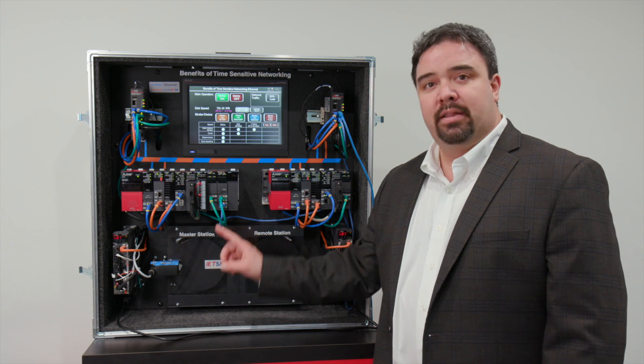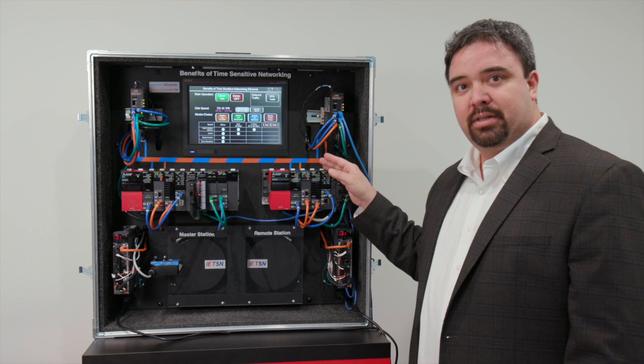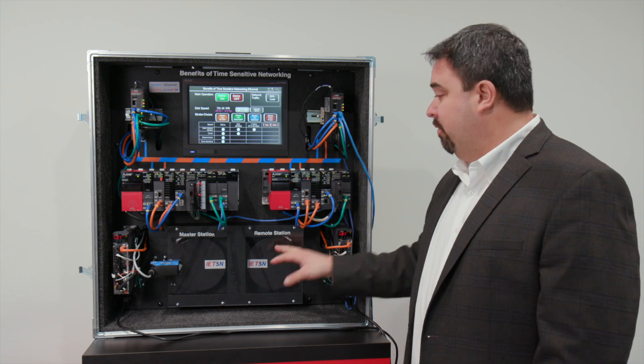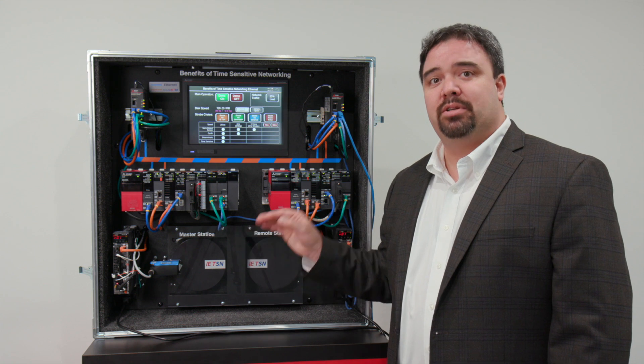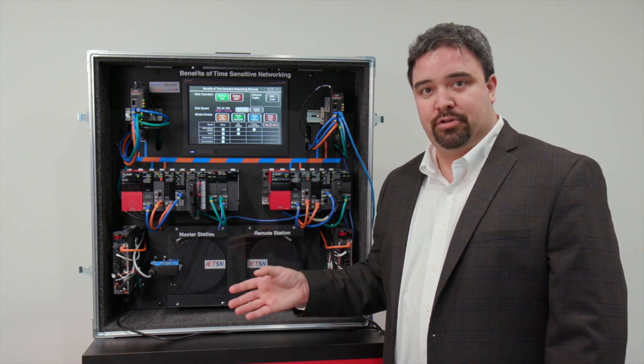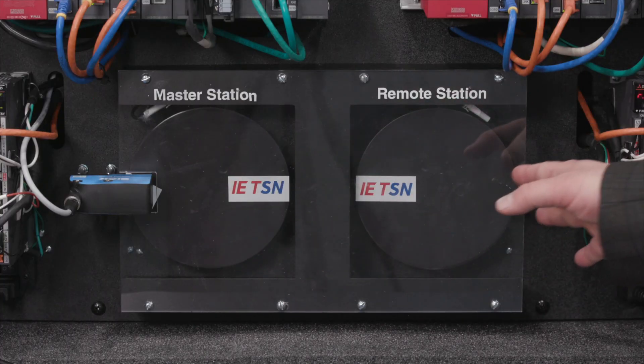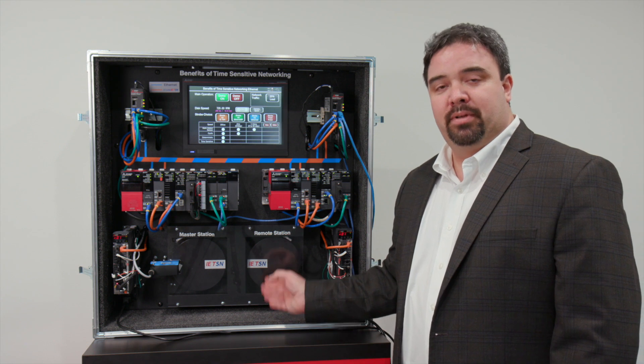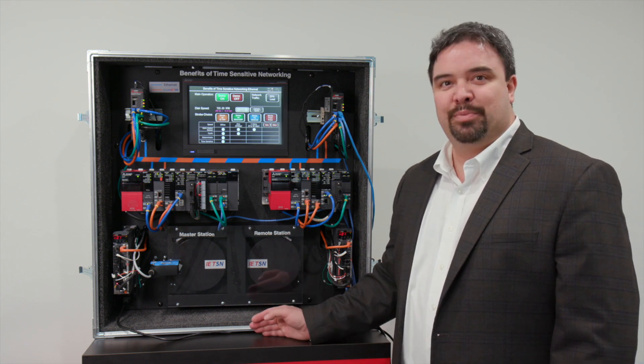We're going to take the speed and the position of this disk and pass it through the network using CC-Link IETSN over to the remote station. So both disks will be at the same speed and the same position every single time. What we're going to vary is the LED strobe. So on the left side will be TSN and that won't change. But on the right side we'll change to Ethernet and Ethernet IP and we'll see what that looks like. Let's begin.